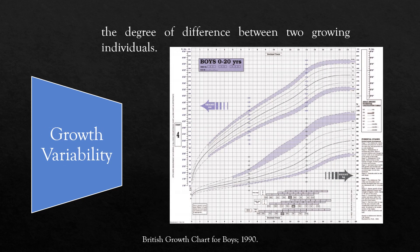The second important concept is growth variability. Growth variability indicates the degree of difference between two growing individuals. Since there is always variability among individuals, growth charts are made to compare the growth of a given child relative to standard values.